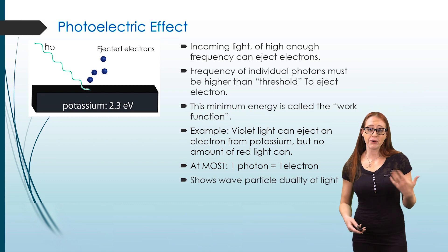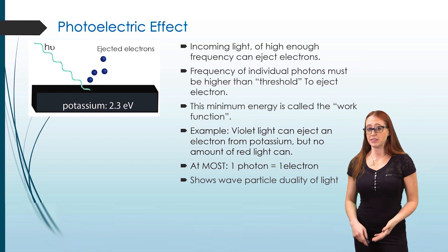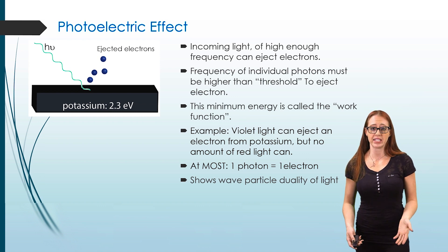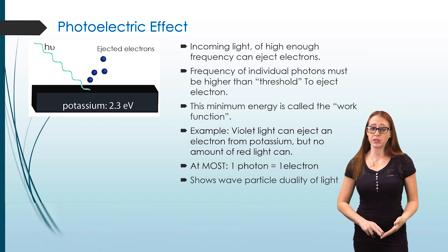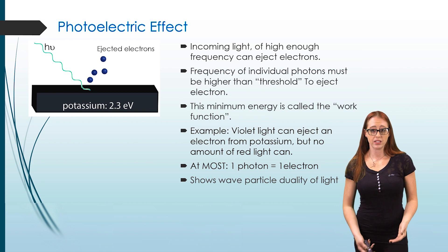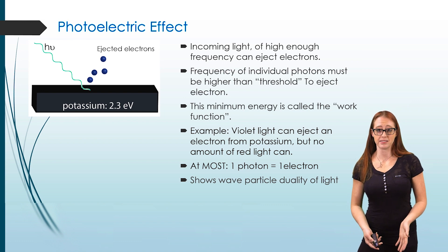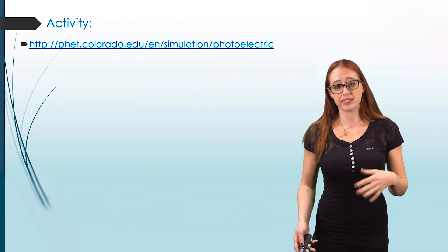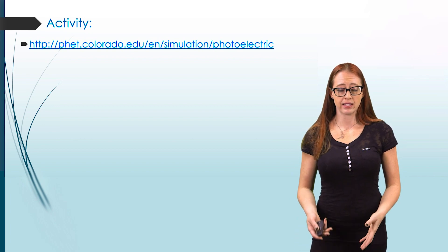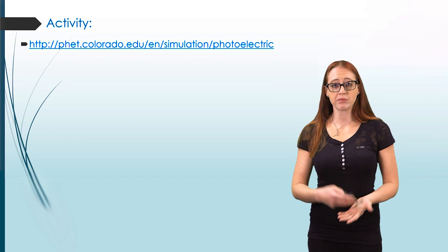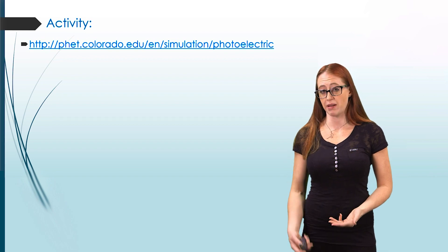How can we figure out what energy is needed to eject the electrons? Each metal is going to have a specific work function — the amount of energy that it takes to eject the electrons. If you know the work function, you know the threshold energy. To find the threshold frequency, you use E = hν, which is the same equation we've talked about in earlier podcasts. I want you to do a little activity to help you visualize this before we go further.